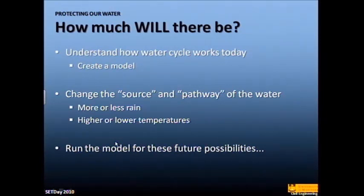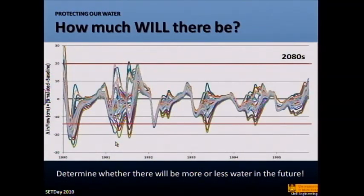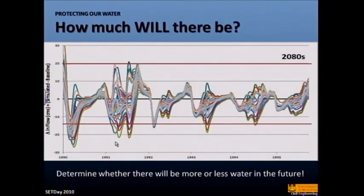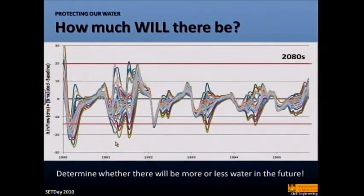We can look at and understand how the water cycle works, create a model of it, and then change things — change temperature, change precipitation — and predict what's going to happen to the flow. The result is plots showing changes in flow. In a simulation I did on the Winnipeg River Basin: for 2020, if everything was the same as today, there would be no variation. As I go forward to the 2050s and 2080s, for different temperature and precipitation scenarios, the flows are actually changing and decreasing. So for this particular region, the models are predicting decreases in flows.